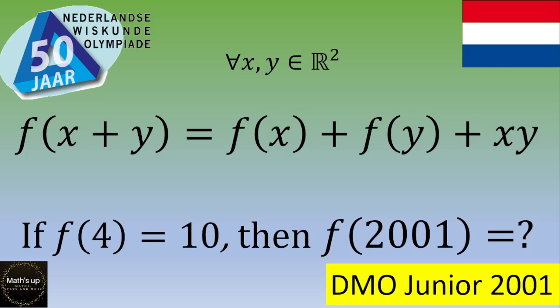Hello and welcome. This exercise was given during the Dutch Junior Math Olympiad in 2001. The problem is: x and y are two real numbers, and f(x+y) = f(x) + f(y) + xy. If f(4) = 10, then what is the value of f(2001)? If you want to give it a try, please pause the video; otherwise, let's see the solution.